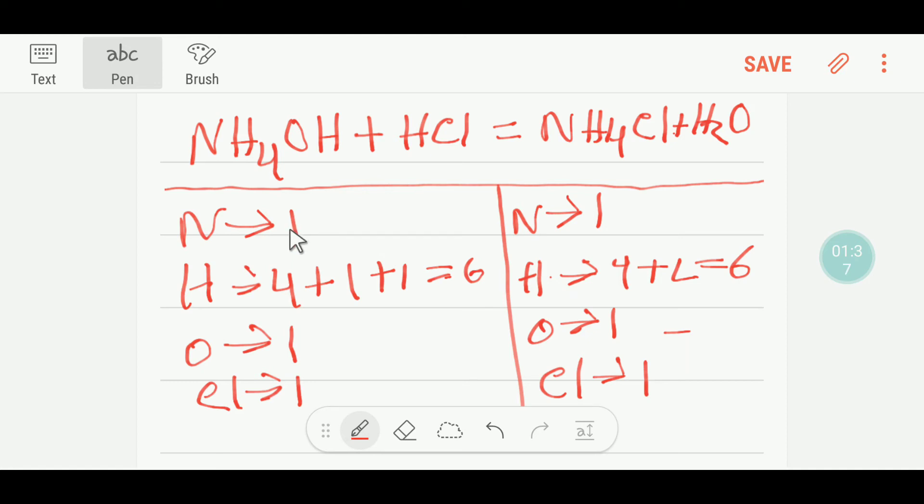Now I will compare the number of atoms from both sides. On the left-hand side we have one nitrogen, on the right-hand side also we have one nitrogen, so this is balanced. Here we have six hydrogen, six hydrogen, so hydrogen is balanced. Here we have one oxygen, here we have one oxygen, so oxygen is balanced. Here we have one chlorine, here we have one chlorine, so chlorine is balanced. So this equation is already balanced. You have nothing to do.